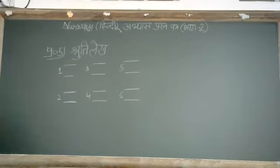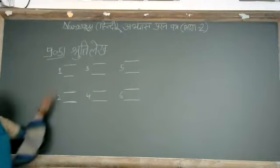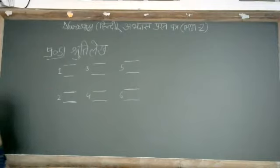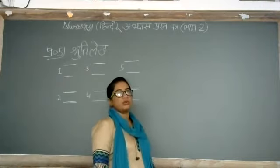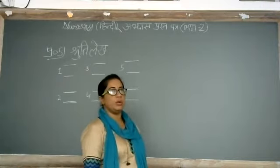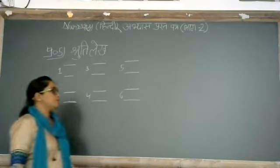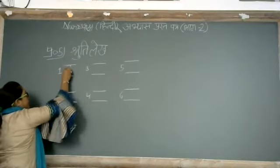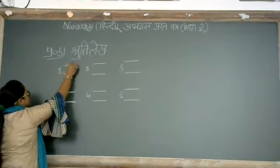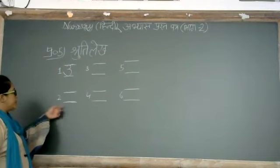Shruti lake mein humein kya karna hai? Mamma aapko kuch akshar bolenge aur aapko wahi akshar likhne hain. Toh first number pe aap likhenge — chhota usi ullu. Likho chhota usi ullu. Prost check kijiye. Aapne sahi likha hai. Next.